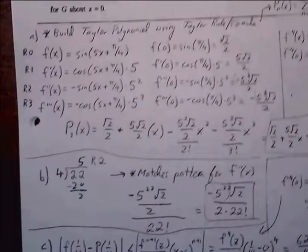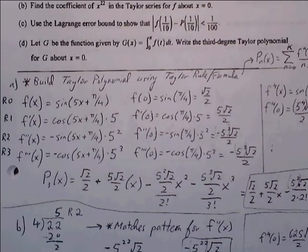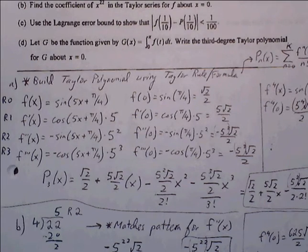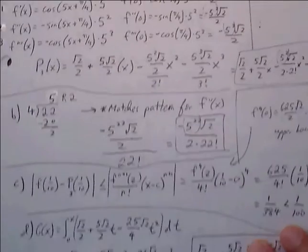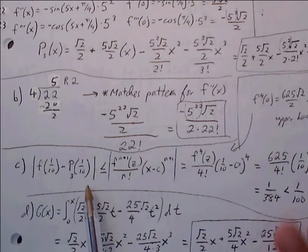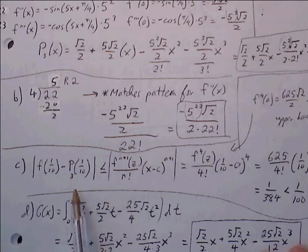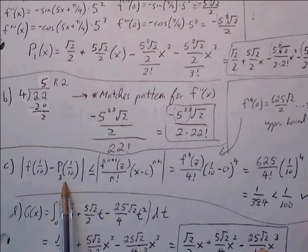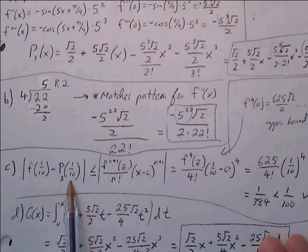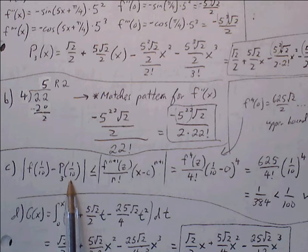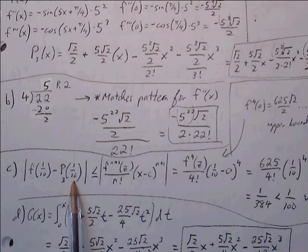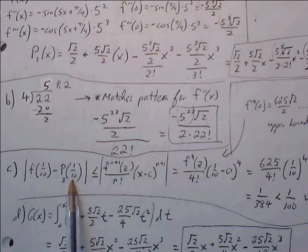Part C: use the Lagrange error bound to show that |f(1/10) − p(1/10)| < 1/100. To review: we have a third degree Taylor polynomial, which is just an approximation. If we use it to evaluate at 1/10, we get an approximate value. Lagrange error bounds tell us the approximation won't be off by more than a specific remainder amount.